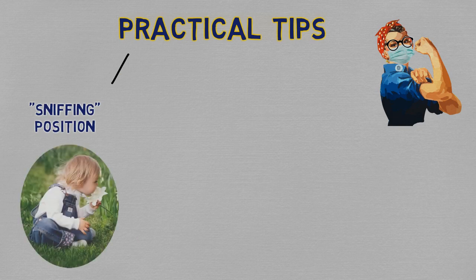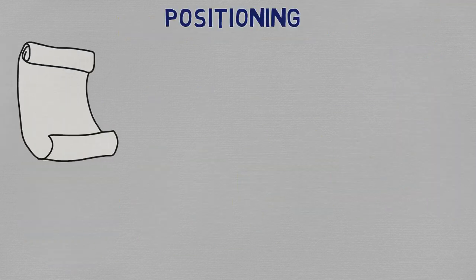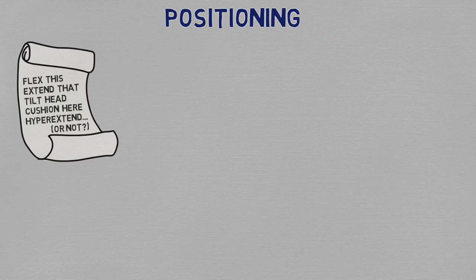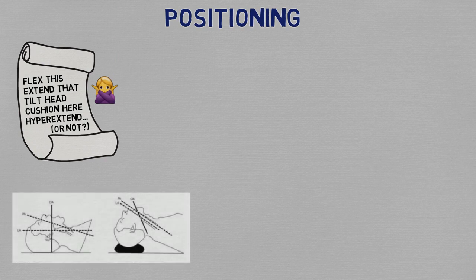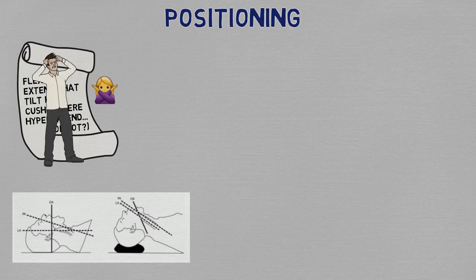The first thing is the sniffing position. Traditional texts will explain to you with words how you should try to flex the neck, or extend the neck here or there, tilt the head, use a cushion, avoid hyperextension, or attempt hyperextension. Clearly, that's not the ideal way for you to remember the steps in the moment of heat. Some also give you these diagrams and try to explain to you that you have to align this axis with that axis and show you these lines and arrows. And frankly, the info doesn't come up that easily also when you have a dying patient in front of you.